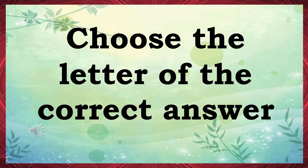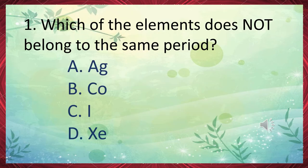Choose the letter of the correct answer. Number 1: Which of the elements does not belong to the same period? A. Ag, B. Co, C. I, D. Xe. The answer is letter B, cobalt (Co).